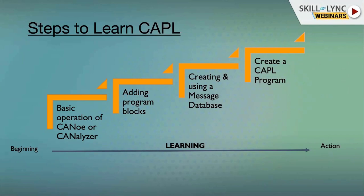The database contains the name, identifier, and the data you are going to send. Each database holds information about signals. Since CAN is an eight-byte data protocol, each bit can be configured. Using this database we can then create a CAPL program.